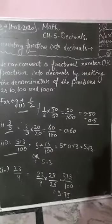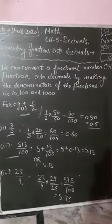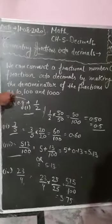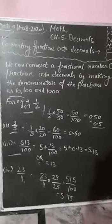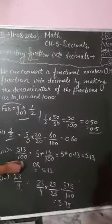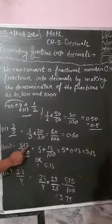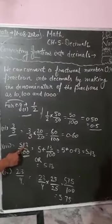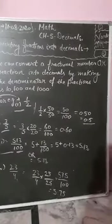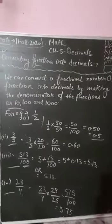The third example is 513 over 100. There are two methods. First, since this is an improper fraction, you can convert it into a mixed fraction: 5 plus 13 over 100. Or you can directly apply the rule: two zeros are in the denominator, so fix the decimal point two digits from the right of 513. The answer is 5.13.